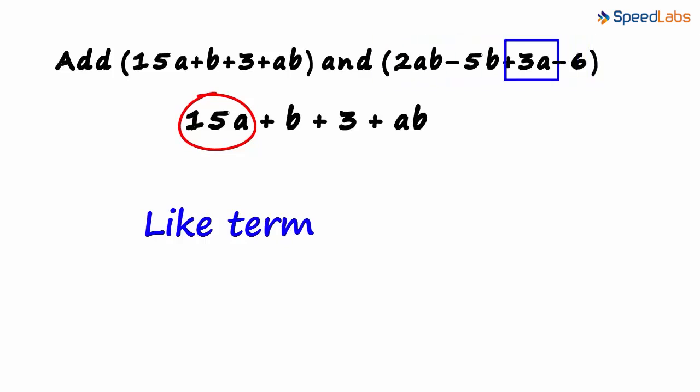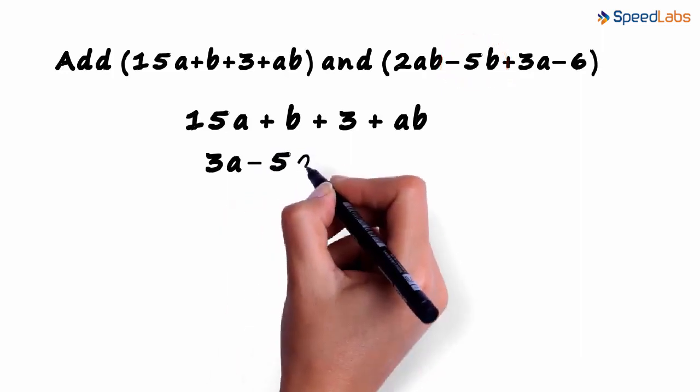Do we have a like term in the second expression? Yes, we have 3a. We write 3a right below 15a. We have to keep the sign of the terms in mind. Here, 3a had a plus sign and so we wrote it as is. The second term in the first expression is b and minus 5b is a like term. We write 5b with a negative sign.